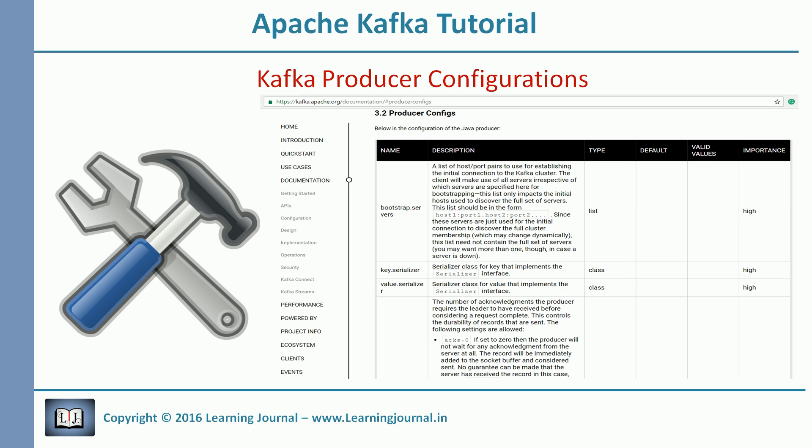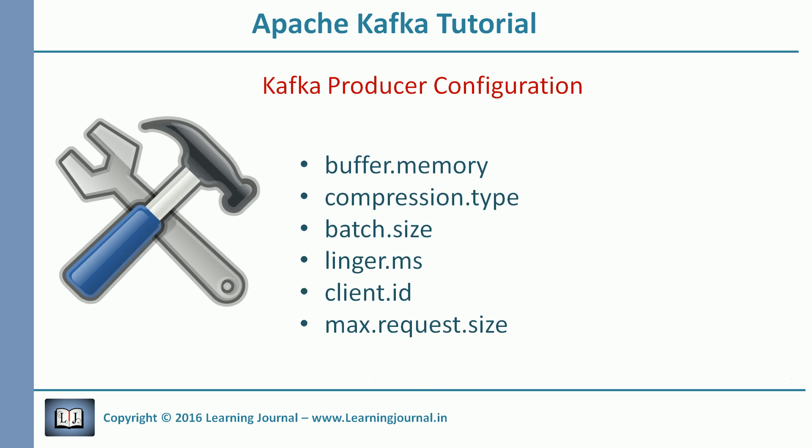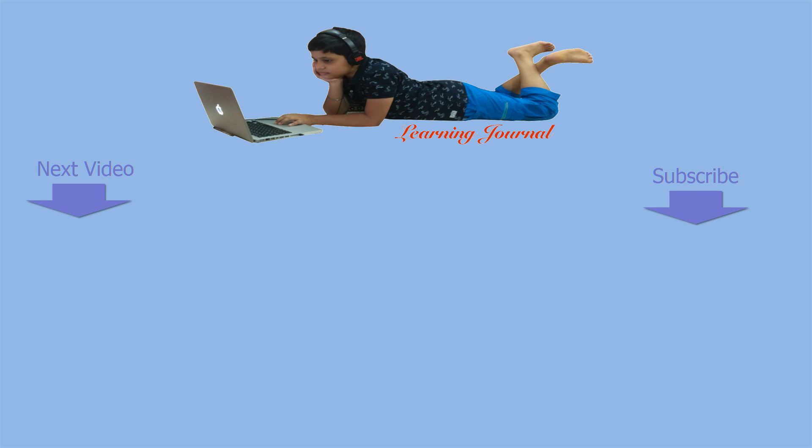There are a few more important properties. I recommend checking the Kafka documentation for those properties — they are relatively straightforward, but if you have any doubts, you can reach out by posting a comment. The primary objective of this session was to understand the ordering guarantees of Kafka. You should now have a fair idea that you can preserve order in a Kafka partition, but it comes at the cost of throughput. That's it for this session. In the next video, we will start exploring Kafka consumers. Thank you for watching Learning Journal — see you again, keep learning and keep growing.